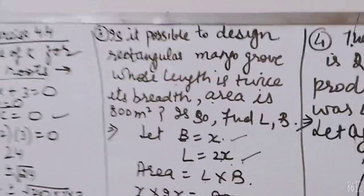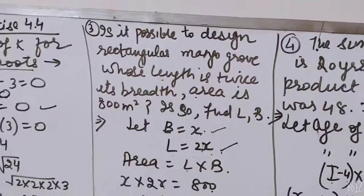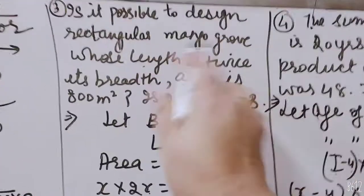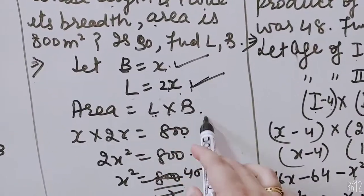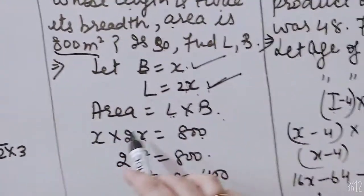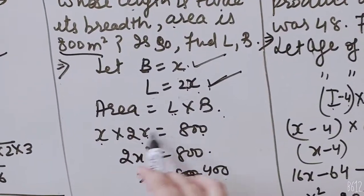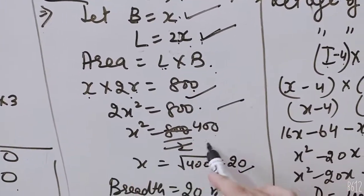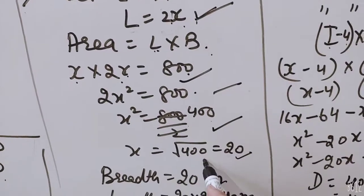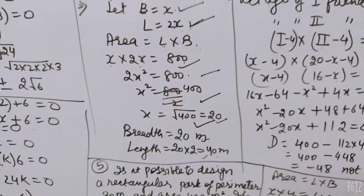Next question. Is it possible to design a rectangular mango grove whose length is twice its breadth? If length is 2x, then area is equal to x into 2x equals 800. 2x squared equals 800. x squared equals 400 and x comes to 20. Breadth is 20m, length is 2x equals 40m.